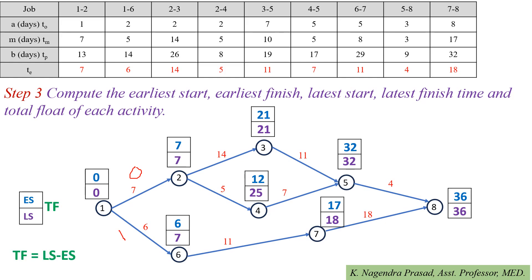Next, determine the total float for each activity, where total float = latest start time minus earliest start time. At event 1: 0 - 0 = 0. At event 2: 7 - 7 = 0. At event 3: 21 - 21 = 0. At event 4: 25 - 12 = 13. At event 5: 32 - 32 = 0. At event 6: 7 - 6 = 1. At event 7: 18 - 17 = 1. At event 8: 36 - 36 = 0.